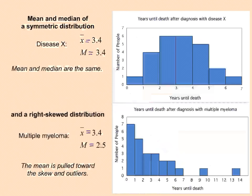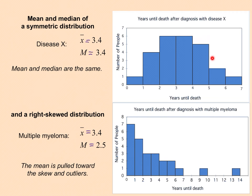Here we have a distribution for years until death after diagnosis with disease X — a histogram showing the number of people that survived one to two years, two to three years, and so on. It looks pretty symmetrical, so the mean is 3.4 and the median is also 3.4. That's because there's no skew or outliers in that data set. In a second plot for years until death after diagnosis with multiple myeloma, most people survived less than one to two years while a few survived upwards of 13 or 14 years — a clearly right-skewed data set. Here the mean is 3.4 but the median is 2.5, with the average pulled to the right by that right-skewed tail.